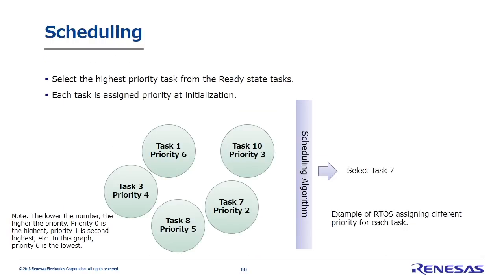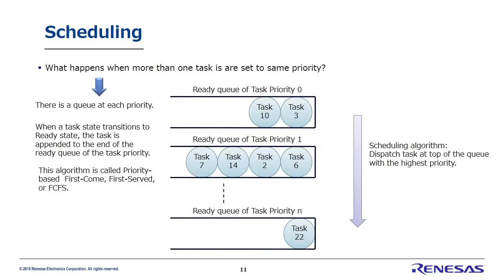Choosing the ready task with the highest priority is called scheduling, and the algorithm for this is called a scheduling algorithm. Every task must be given a priority level so that the scheduler can choose the task with the highest priority level. In this example, the highest priority is 1, second highest is 2, and so on, so task 7 at priority 2 will be chosen. When multiple tasks have the same priority level, every priority level has a queue. The scheduler dispatches the task at the head of the highest priority level queue into running. This algorithm is called priority-based, first come, first served, or FCFS.